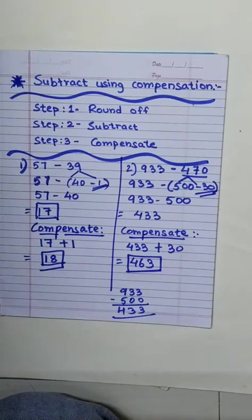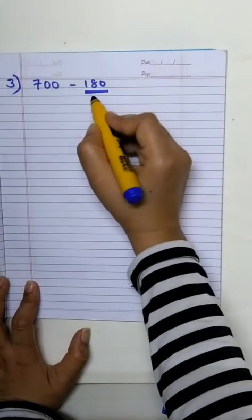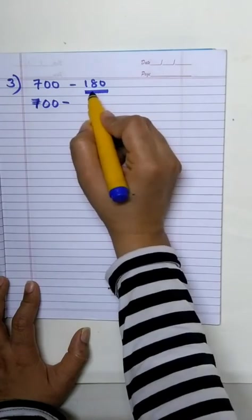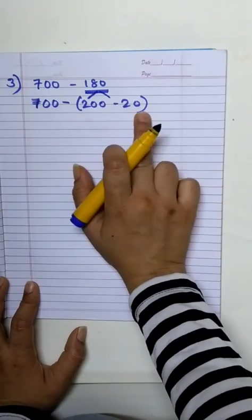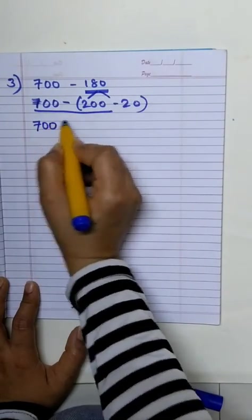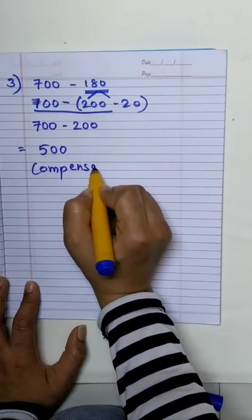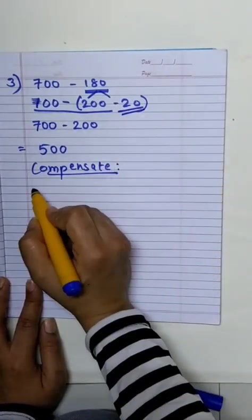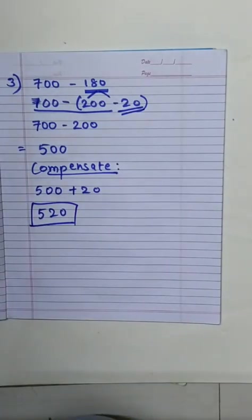Let's try the last one. So, 700 minus 180. Of course, we will round off this number at 100's place. So, 700 minus 200 minus 20. Because when we round off 180, it becomes 200. And 200 minus 20 becomes 180. Right? So, first of all, we will subtract 200 from 700, which gives us 500. Now, time to compensate. We subtracted 20. So, now, we will be adding 20. So, our answer is 520. 700 minus 180 is 520. It's easy. Isn't it? I hope you can try more on your own.